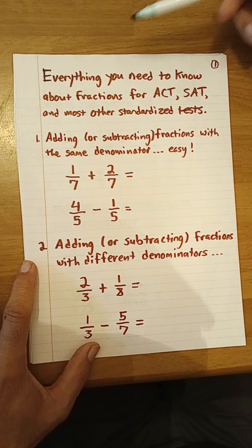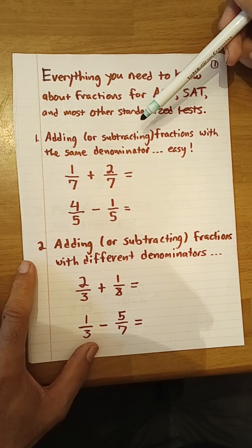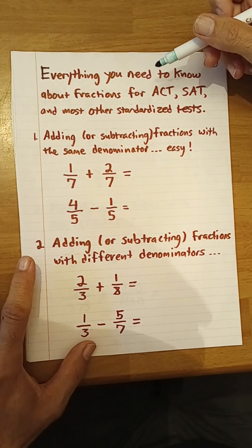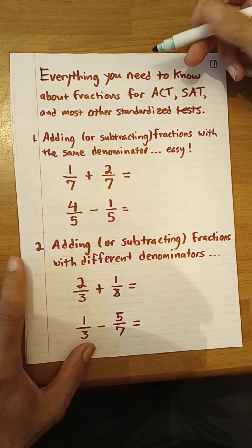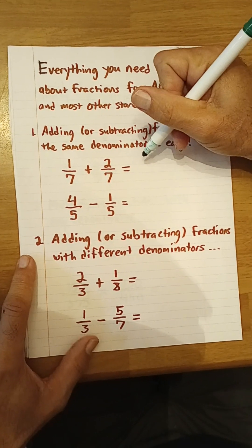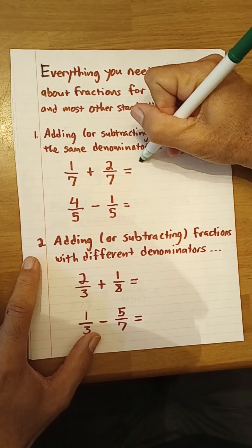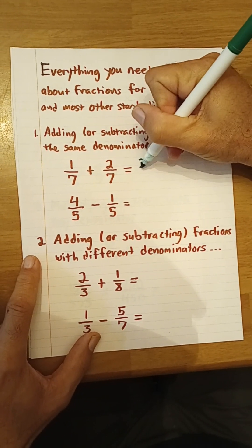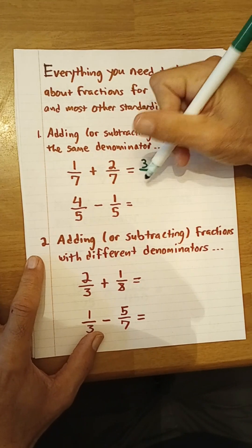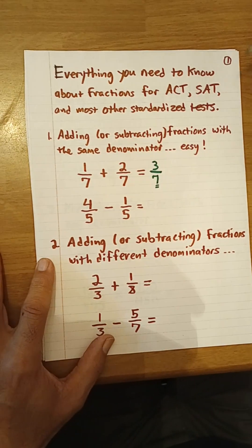Let's start with adding or subtracting fractions with the same denominator. This is quite easy. If we have 1/7 plus 2/7, we basically add the numerators, so we get 3 over 7, and that's your answer: 3/7.